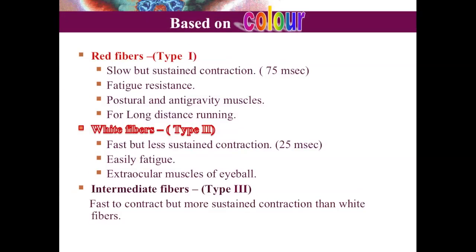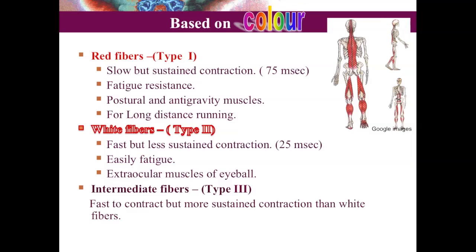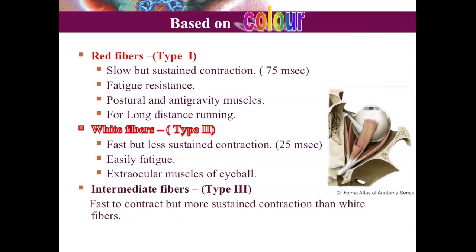According to color, skeletal muscles are divided into red fibers (Type 1), white fibers, and intermediate fibers. Red fibers are slow to contract but sustain contraction for a longer period and don't fatigue easily — postural and anti-gravity muscles are examples. White fibers contract very fast but fatigue quickly — extraocular muscles of the eyeball are an example. Intermediate fibers fall between the two types.